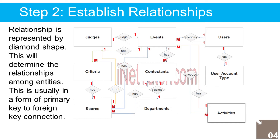After we have specified our entities, it is time to connect or establish relationships among them. 1. User belongs to or has a specific user account type — 1-to-1 relationship. 2. User can add/update/manage information about activities — 1-to-many relationship. 3. User can add/update/manage information about events — 1-to-many relationship. 4. An activity consists of multiple events — 1-to-many relationship. 5. An event has multiple contestants or participants — 1-to-many relationship. 6. A contestant belongs to a specific team or department — 1-to-1 relationship.